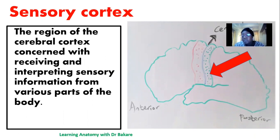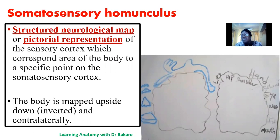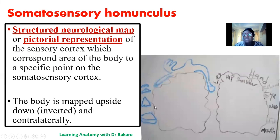The third order neuron finally synapses on the cerebral cortex. The sensory cortex — as described in our previous lecture — is located behind the central sulcus, in the post-central gyrus, also called the sensory cortex. This is the region where sensory innervation from different parts of the body is interpreted. Another thing to look into is the sensory homunculus, which is a structural neurological map — a pictorial presentation of the entire sensory cortex.